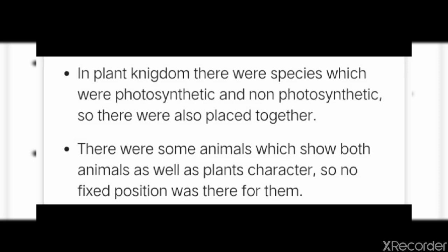Another drawback: there were some animals which show both animal as well as plant characteristics, so no fixed position was there for them. We can take the example of Euglena. Most species of Euglena have photosynthesizing chloroplasts within the body of the cell, which enable them to feed by autotrophy like plants. But other characteristic features — they live in water, move by means of a flagellum, and do not have a cell wall — are all characteristics of animals.